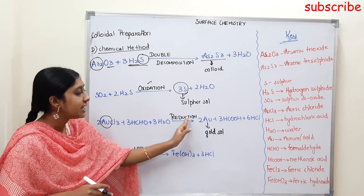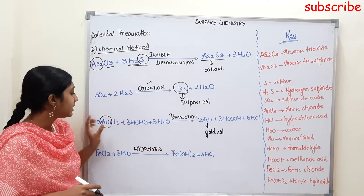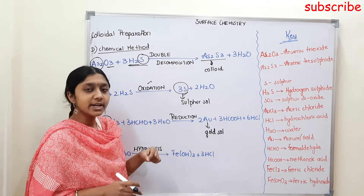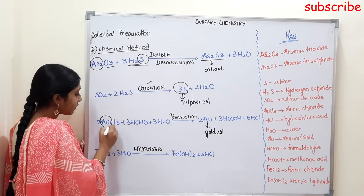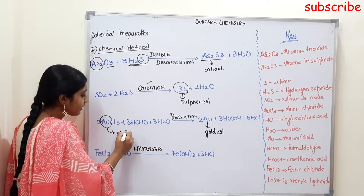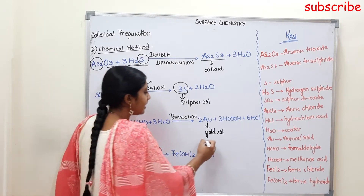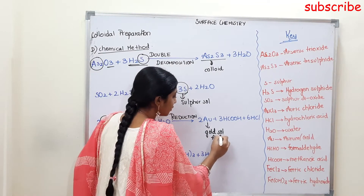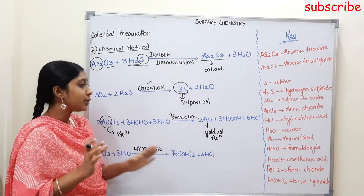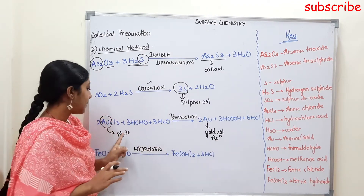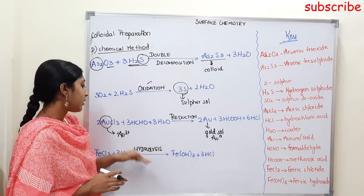In the reduction process, Au3+ is reduced to Au0 — that is, gold in its metallic state. The oxidation state goes from 3+ to 0, which confirms this is a reduction reaction. So by reduction, we obtain a Gold colloidal solution.